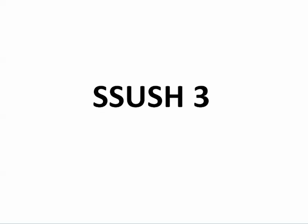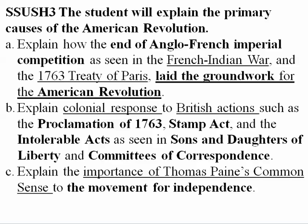In Standard 3, we're going to be talking about and explaining what the primary causes of the American Revolution were. We have three substandards. We're going to look at those separately, just like we did with Standard 1 and 2. Standard 3, Social Studies, U.S. History 3: the student will explain the primary causes of the American Revolution. So here in this standard, we're going to be talking about what caused the American Revolution.